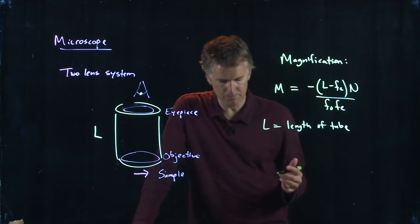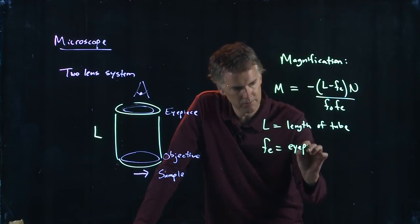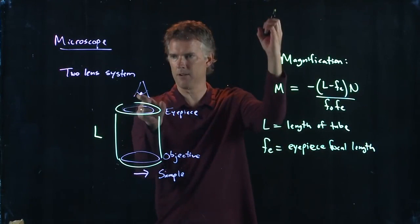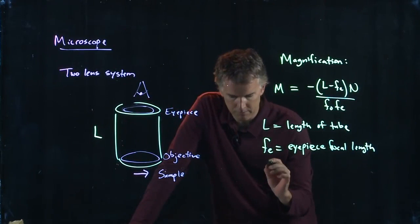FE is the eyepiece focal length. Okay, so that eyepiece up there, you can actually pull it out of the microscope and look through it. It's a very short focal length eyepiece.